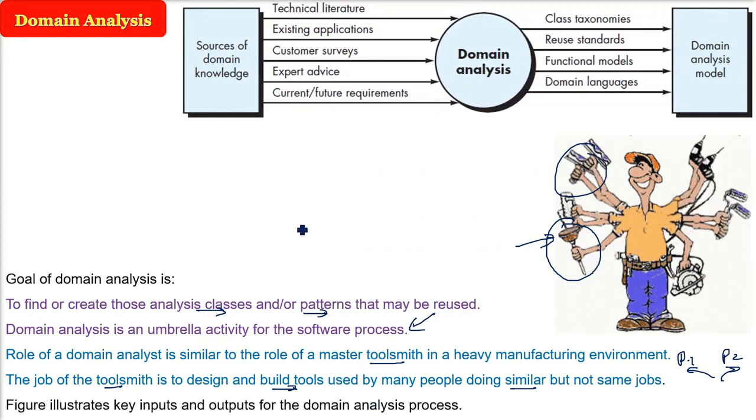If you see here, what are the inputs and outputs you are going to get? How do you get to do the domain analysis? What are the inputs? The final will be the domain analysis model. So the sources can be immense. It can even come from, say, let us take an example - a medical science field. You are making software. So what will be the technical literature? What are the applications which are already being used by the company or other companies for the same space? You can use the medical science people, doctors, and other supporting people to get customer surveys. You can get expert advice or the current and future requirements.